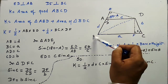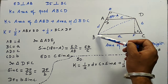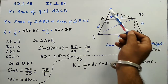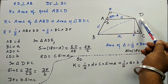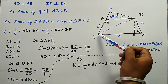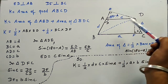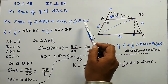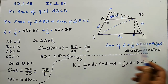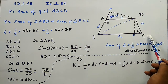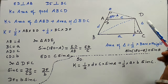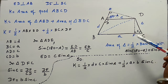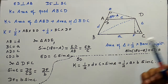In triangle ABD, AB is the base and ED is the height of triangle ABD. For triangle BDC, the base is BC and its height is equal to DF.